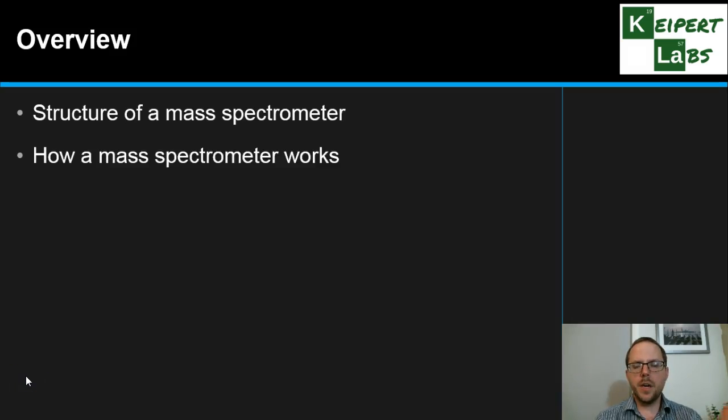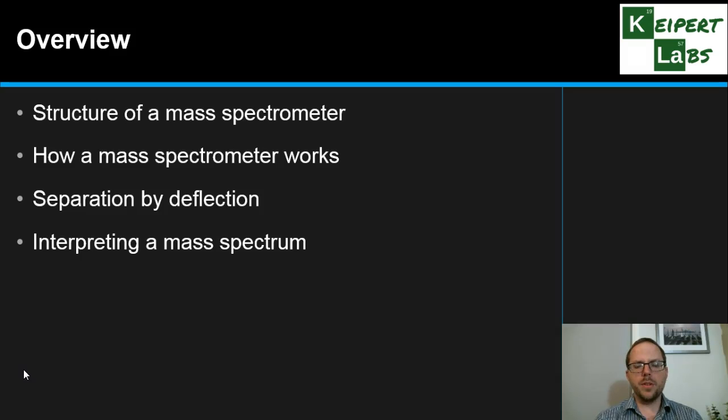I'll give you an overview of what we're going to talk about today. We're going to start by looking at the structure of a mass spectrometer—what are all the different parts of the instrument and how they work. We're going to look at the process of how the mass spectrometer actually functions and can analyze substances. We'll look at the fundamental principle of separation by deflection, and then how we make sense of the mass spectrum produced at the other end.